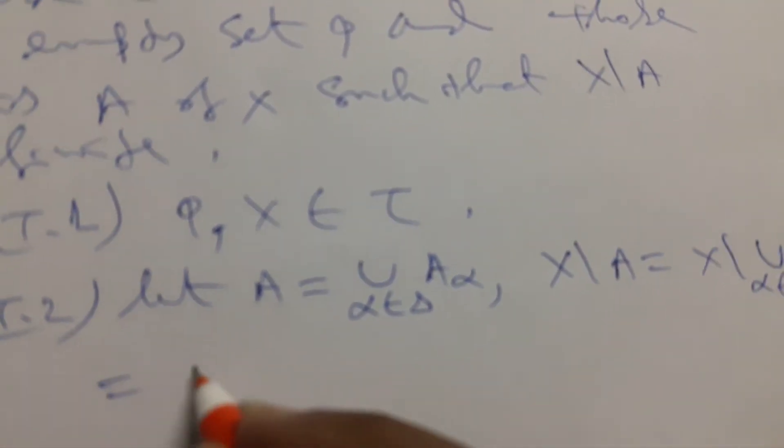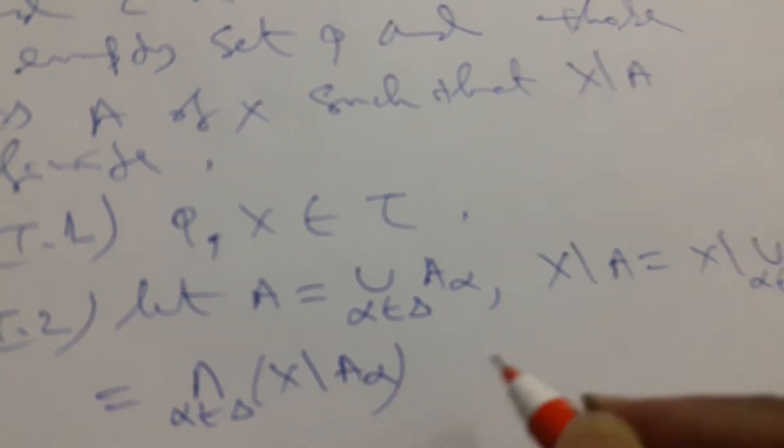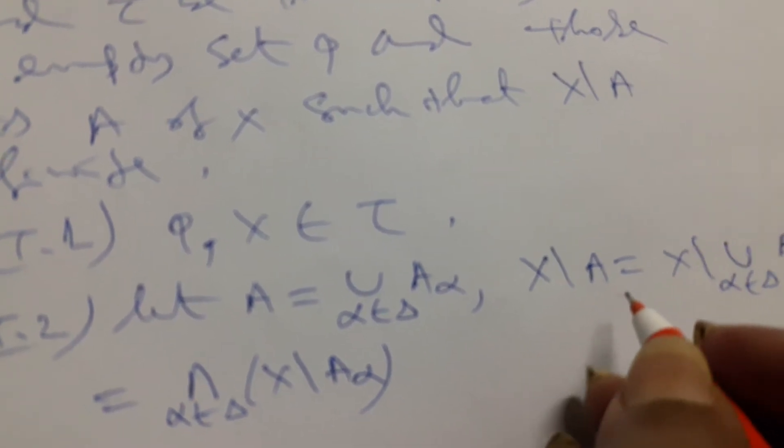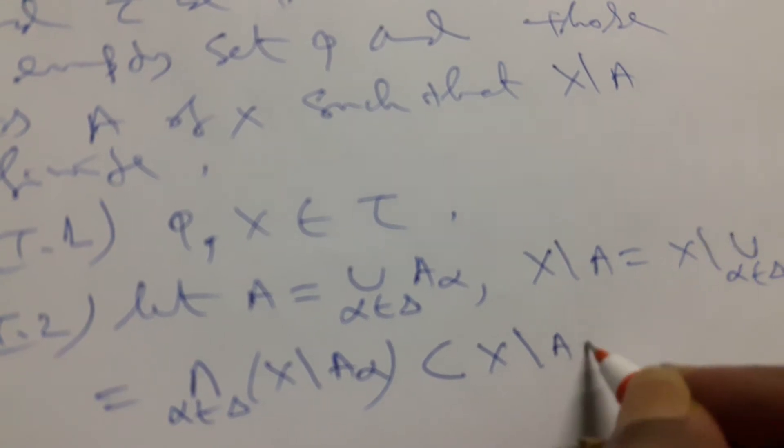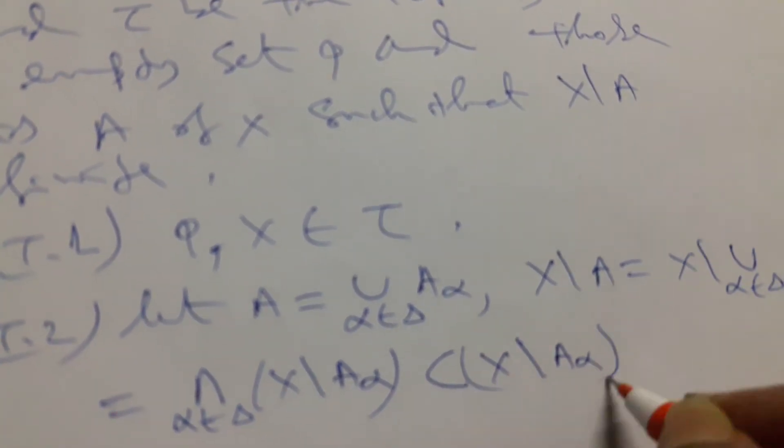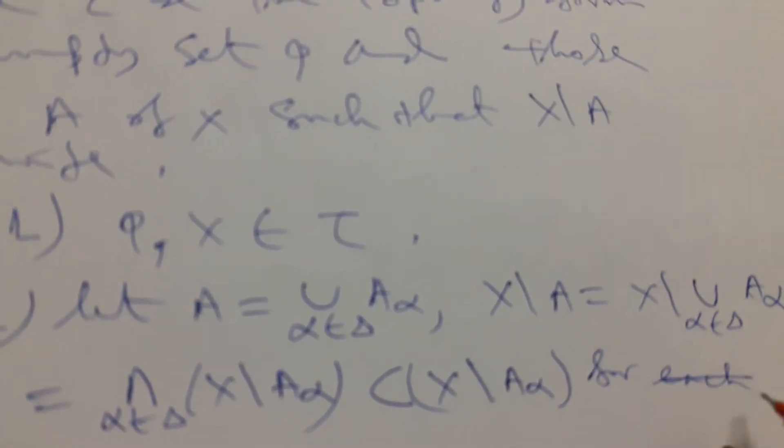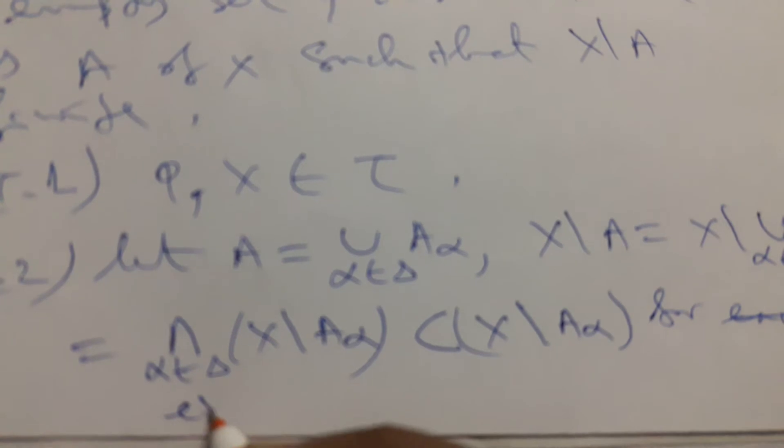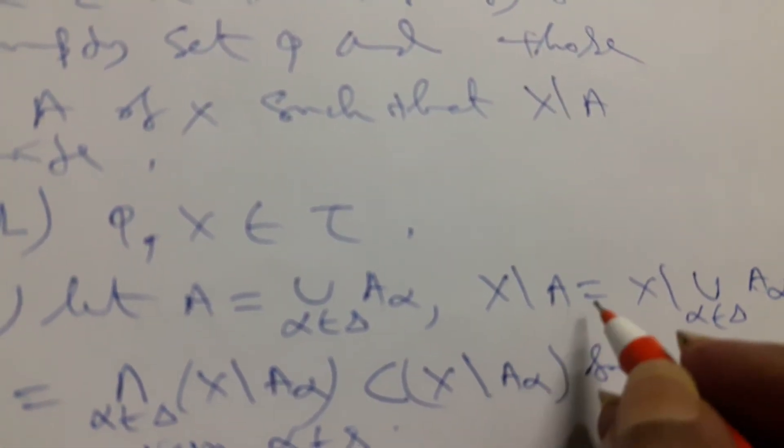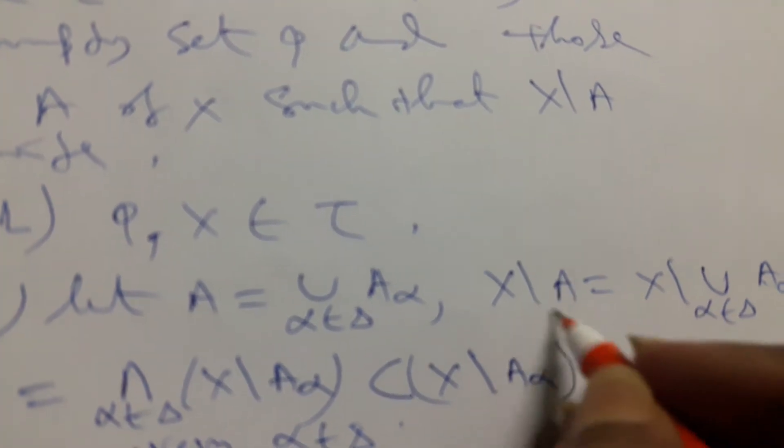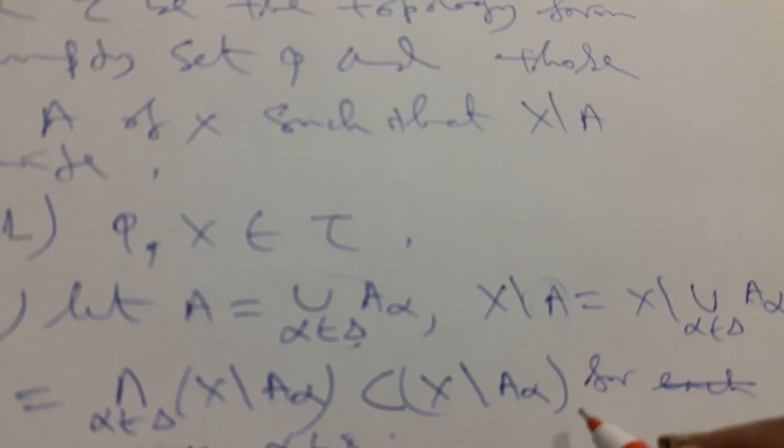That will be intersection of α belongs to Δ of X minus A_α, and that is a subset of X minus A_α for every α belongs to Δ. That is, union of arbitrary number of sets is in the topology.